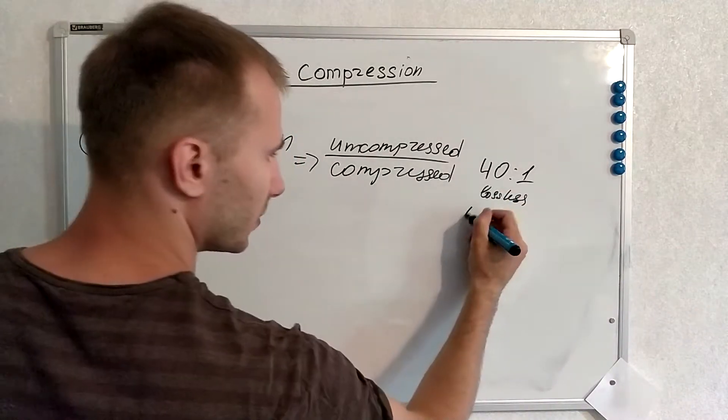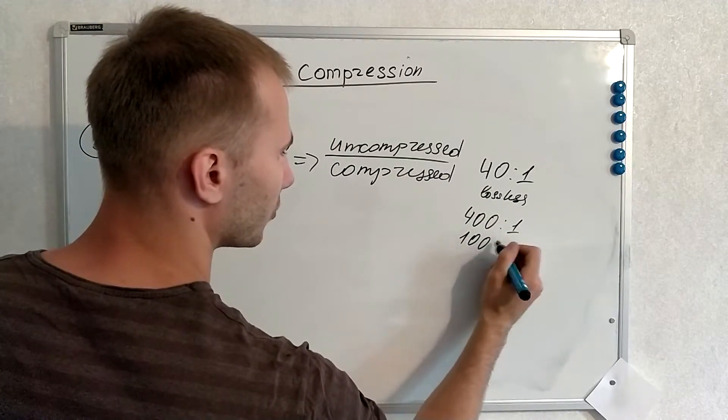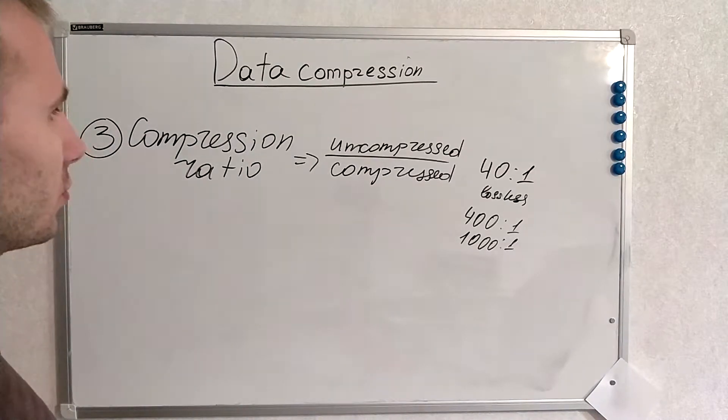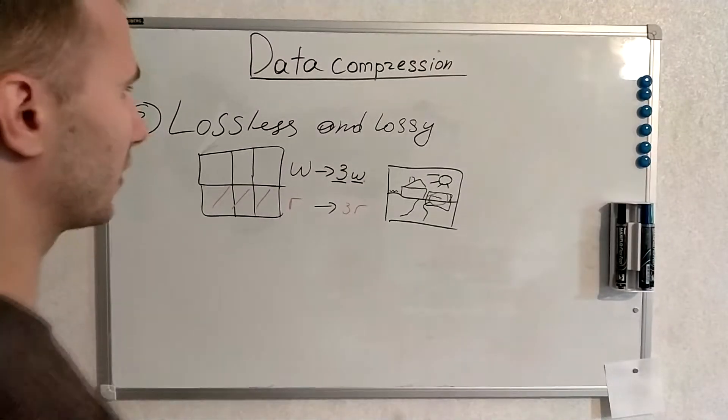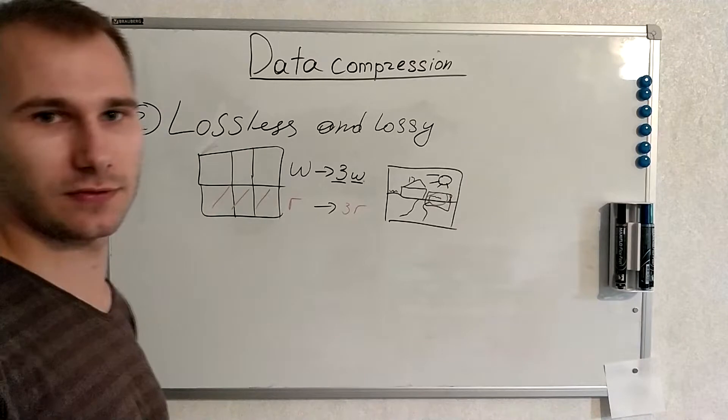In lossy compression it can be 400 to 1 or even 1000 to 1. It depends on the methods we use to compress our data. And actually lossy compression can compress much better than lossless version of compression.